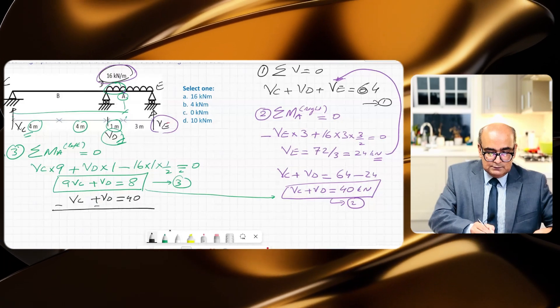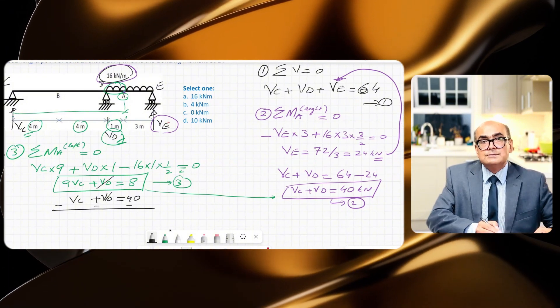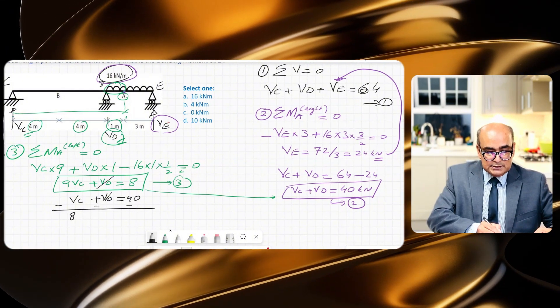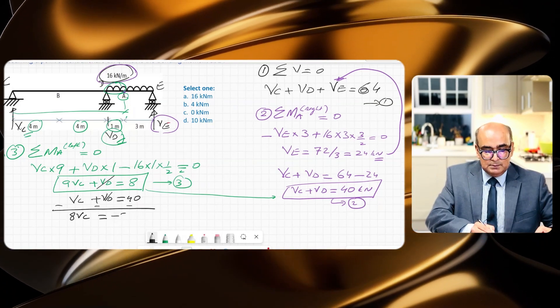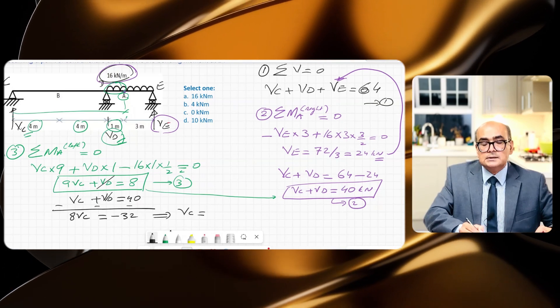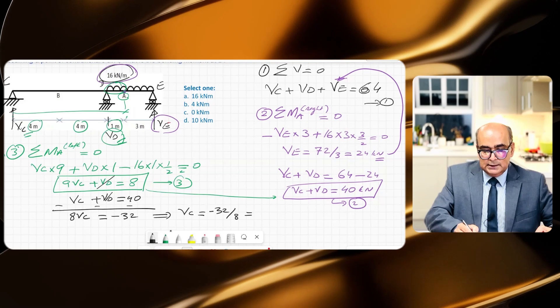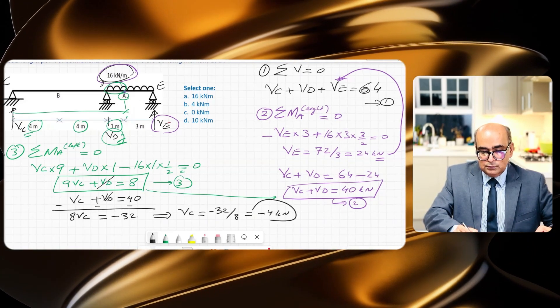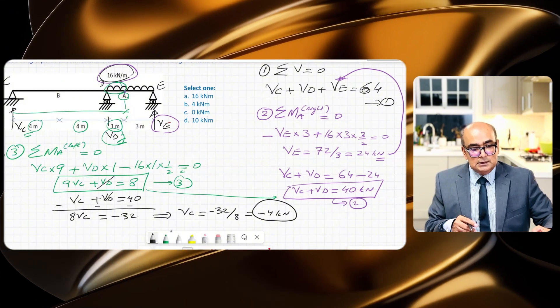So I will have this negative sign, this negative sign, and this negative sign. This and this will get cancelled, so this will give me 8VC minus 40 plus 8 will give me minus 32. So this will give me VC as equal to -32 divided by 8, that is -4 kilonewtons.